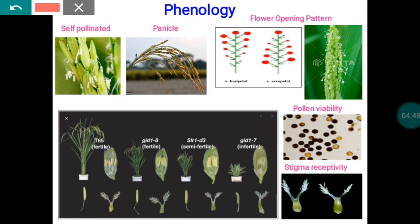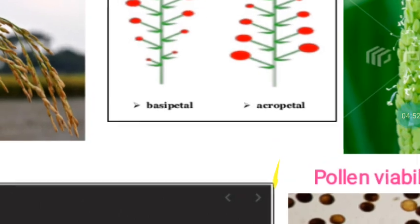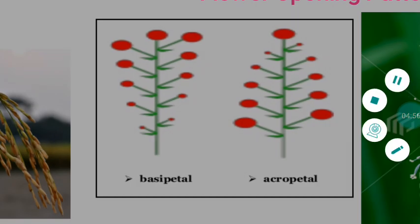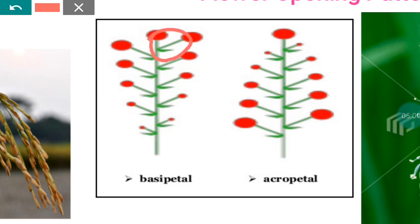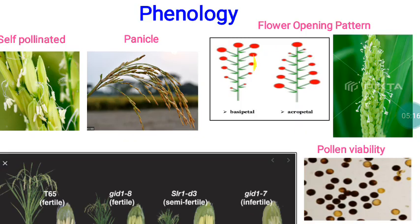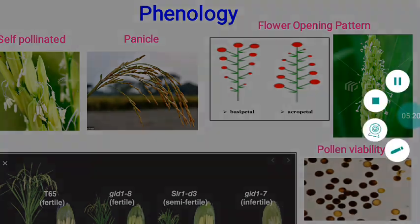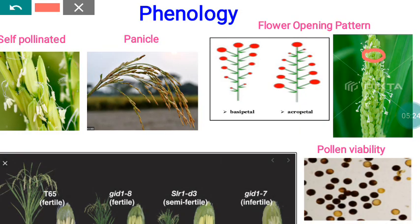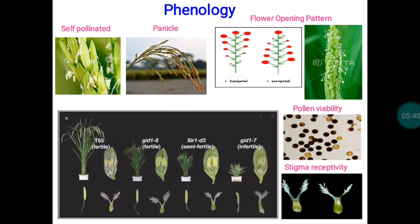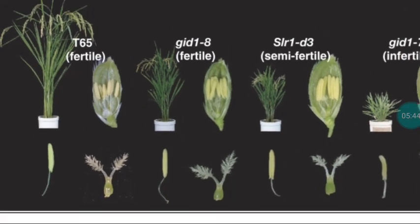In basipetal order, the topmost flower opens first and proceeds downward, whereas in acropetal order the bottommost flower opens first and proceeds upward. In the case of paddy it is basipetal, so the topmost flowers in the panicle start opening and slowly proceed downward until finally the bottommost flowers open.